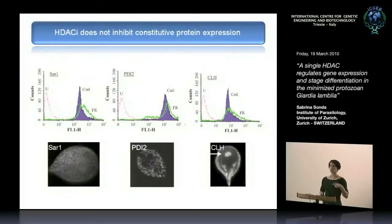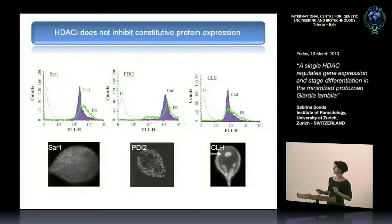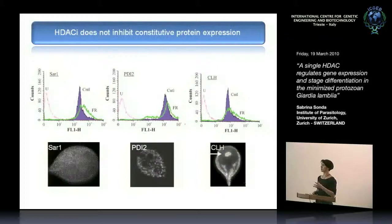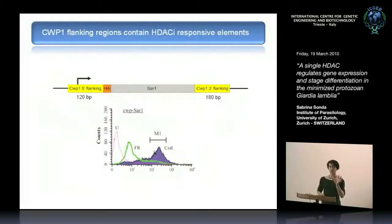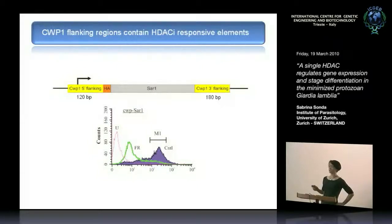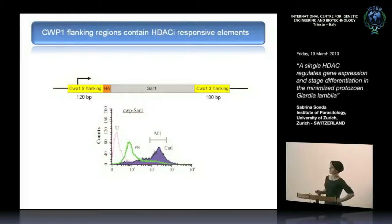As a further set of controls, we tested whether other proteins are downregulated by the inhibitor. We checked three constitutively expressed proteins: SAR1, a cytosolic protein; PDI2, an ER marker protein; and clathrin, which localizes to the peripheral vesicles. None of these three proteins were downregulated in the presence of the inhibitor, again pointing to a very specific effect. We then used the SAR1 protein as a reporter to analyze which elements are important for responsiveness to the inhibitor, by placing the flanking regions of the cyst wall protein gene upstream of SAR1. After transfection — both episomally and as an integrated gene — SAR1 with these flanking regions became responsive to the inhibitor. So these few hundred nucleotide base pairs are sufficient to mediate the inhibitory effect on gene transcription.